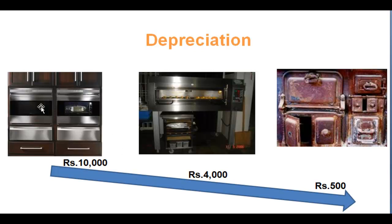After five, six, or ten years of heavy use, the oven is all rusted and worn out. From the new oven to that old oven is the life cycle of this asset. An oven is an asset to Domino's because it helps the company make revenue, and the value of an asset decreases over time.